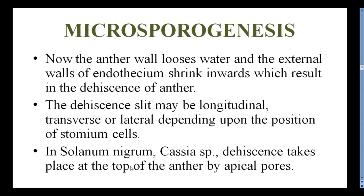The anther wall loses water and the external walls of the endothecium shrink inwards, which results in dehiscence of the anther. The dehiscence slit may be longitudinal, transverse, or lateral depending upon the position of the stomium cells, or at the top of the anther by apical pores.